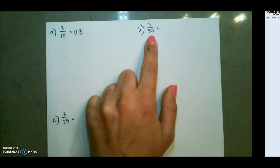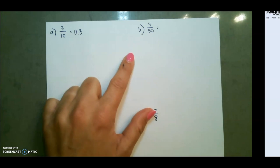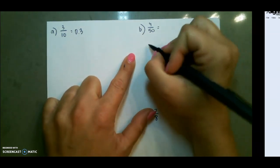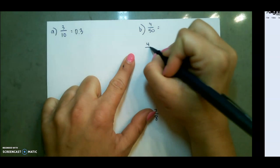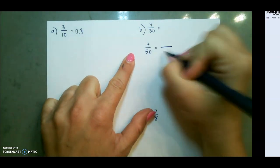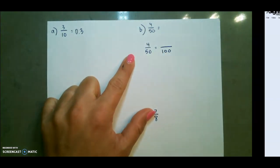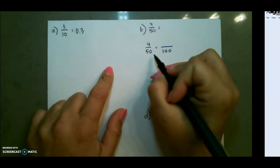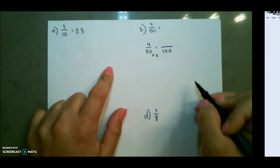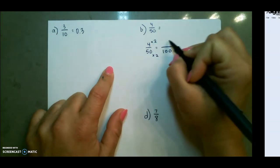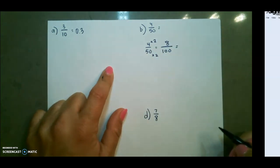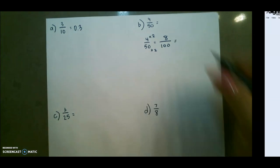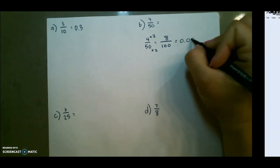The second example: 50 is a multiple of 10, but it's not one of our place values that we reviewed. So I want to set this up to where it can have 100 as the denominator, since that is one of our place values. I can multiply 50 by 2 to get 100, and 4 times 2 to get 8. Since 8 is in the hundredths place, it's going to be 0.08.